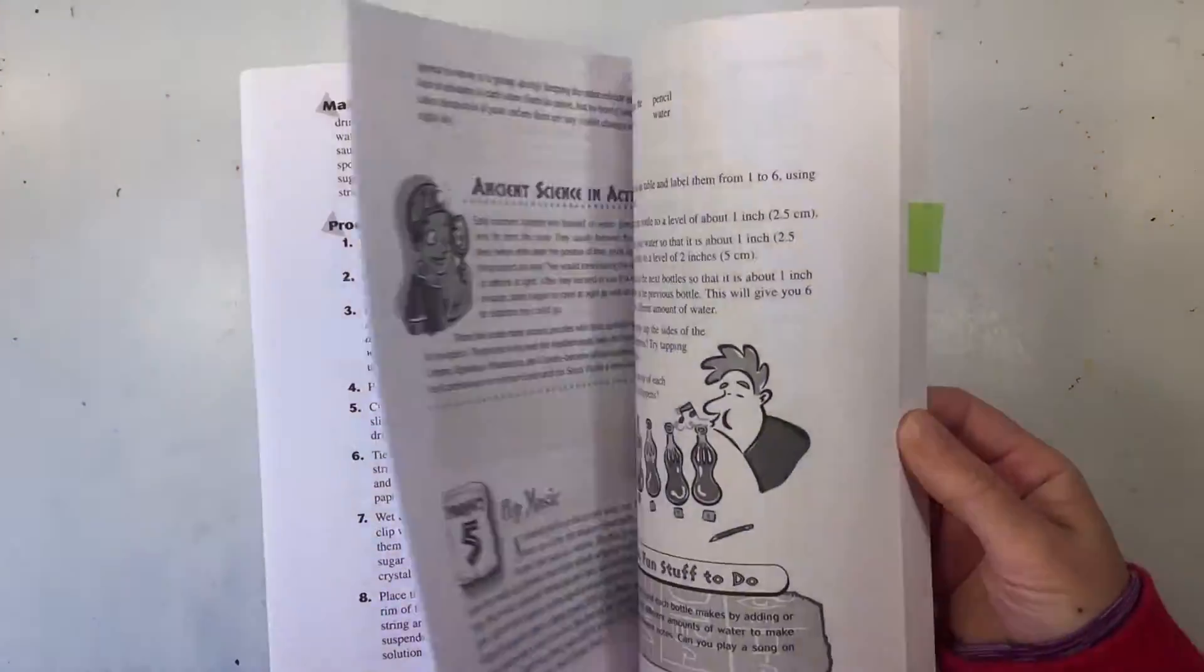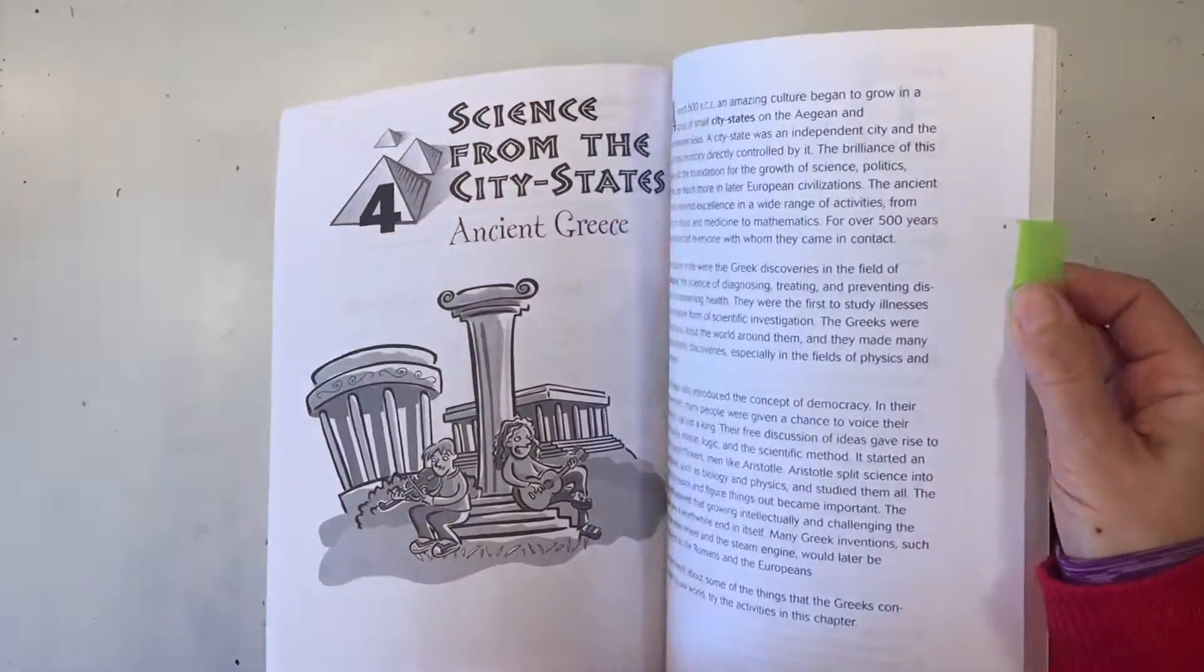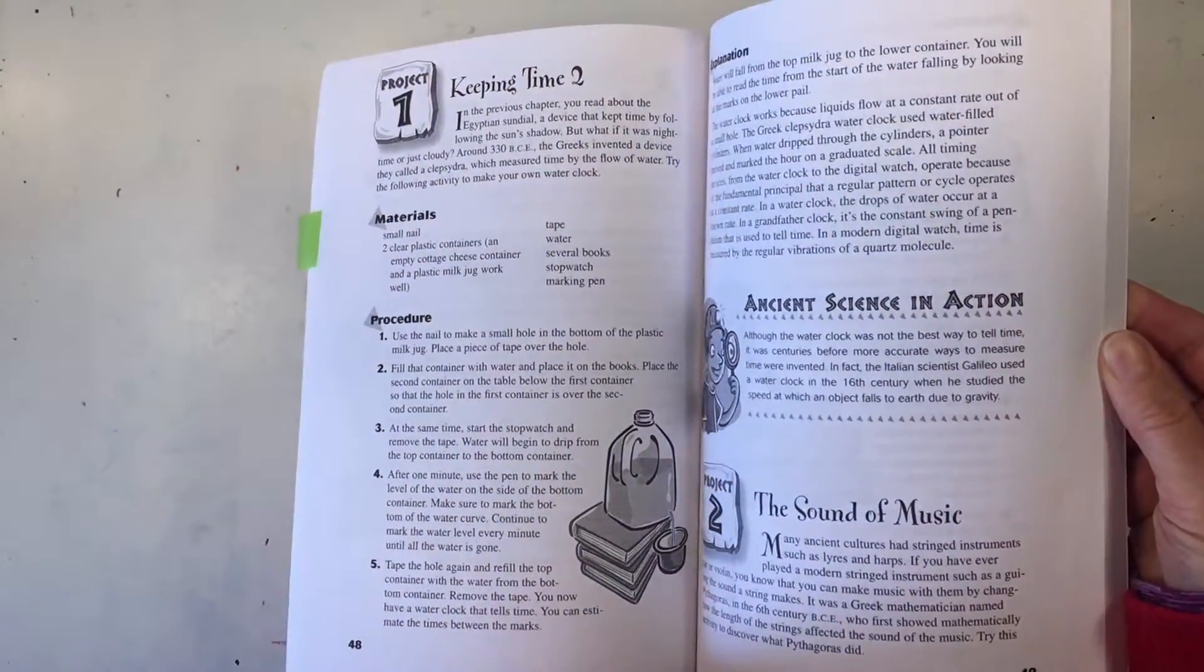We're using this book as inspiration called Ancient Science by Jim Weiss and in here there is a project to make a water clock.